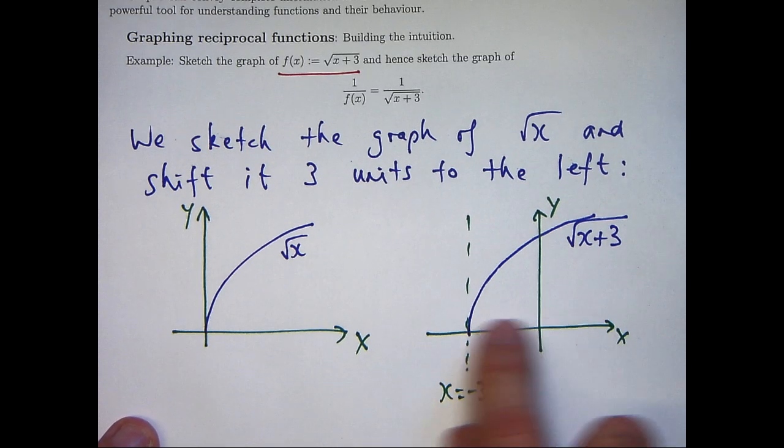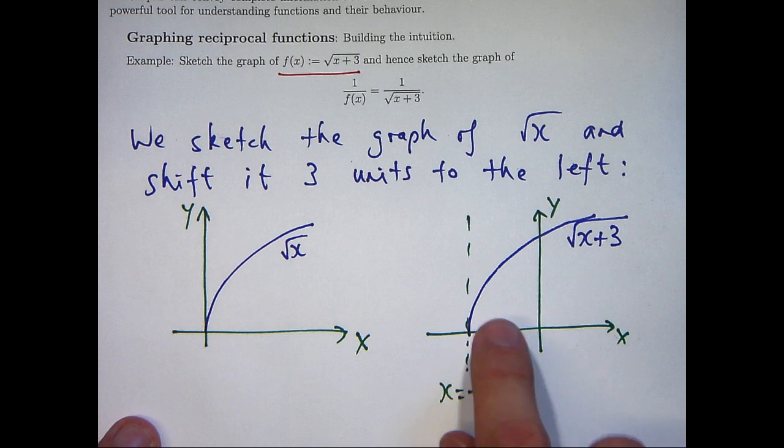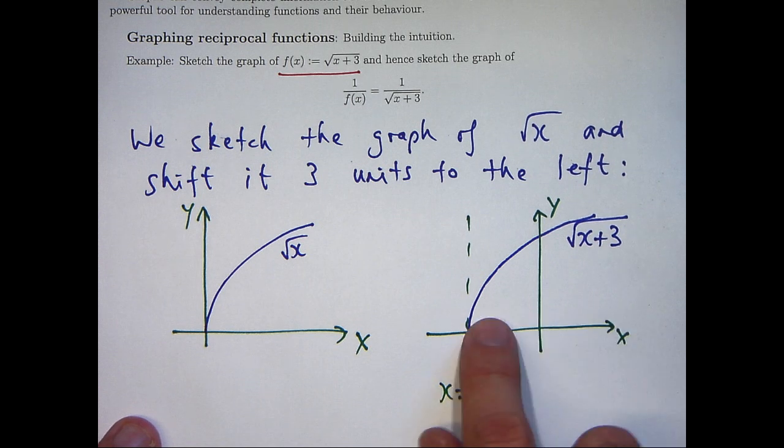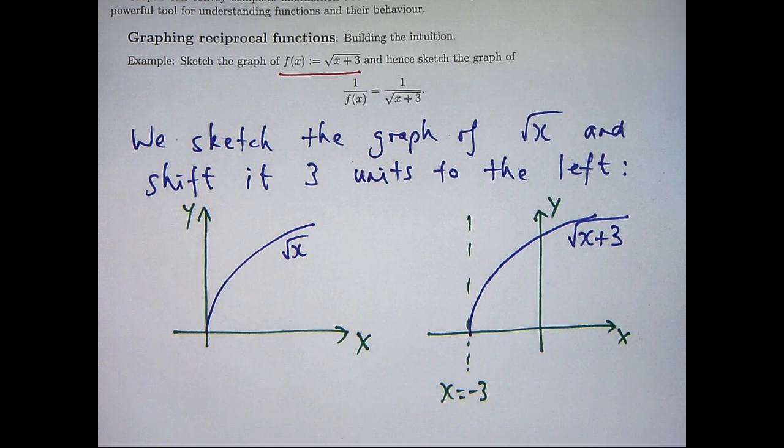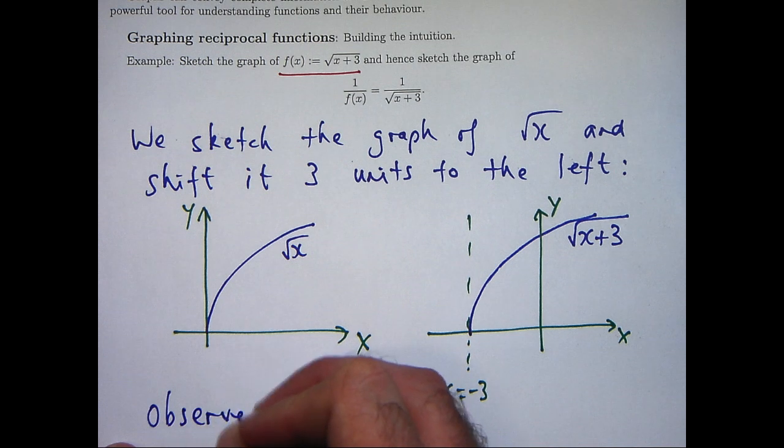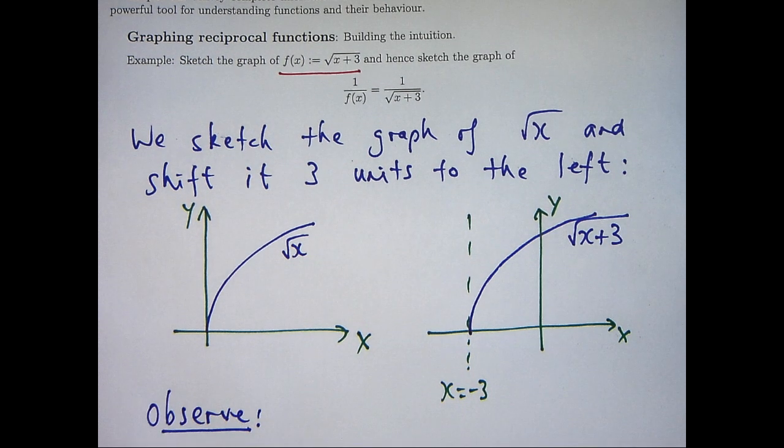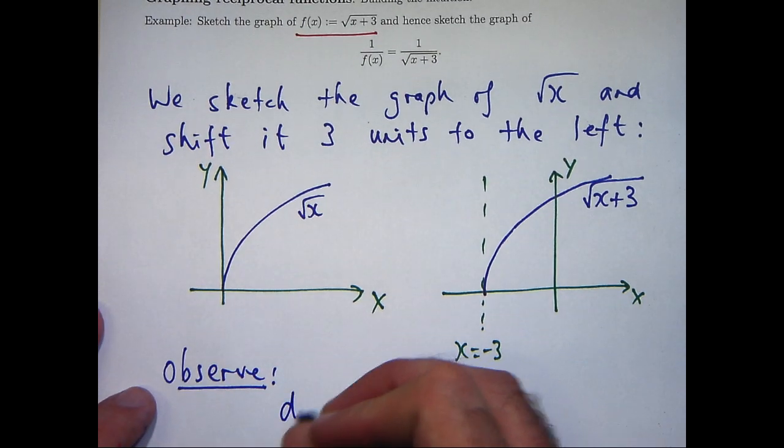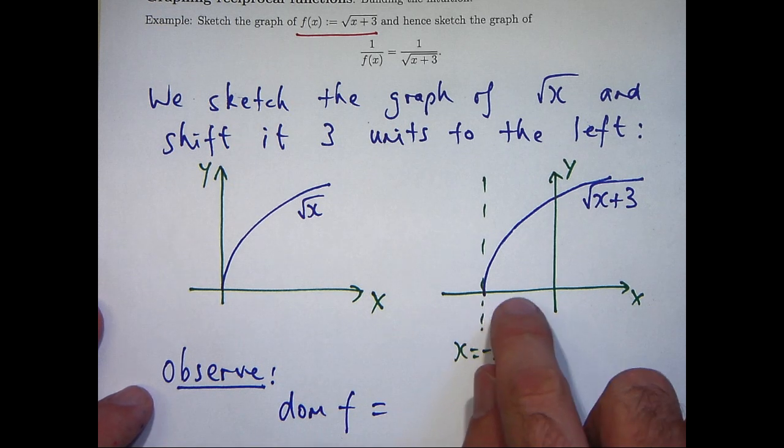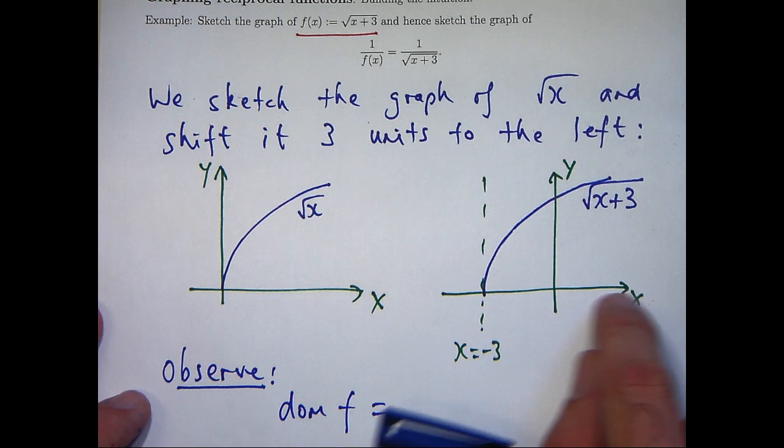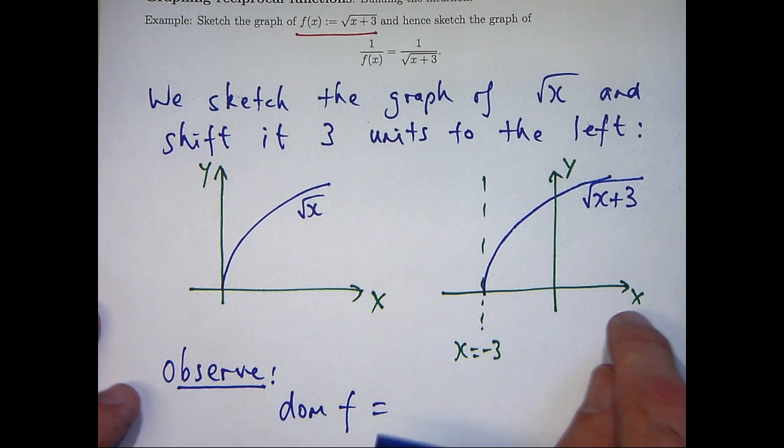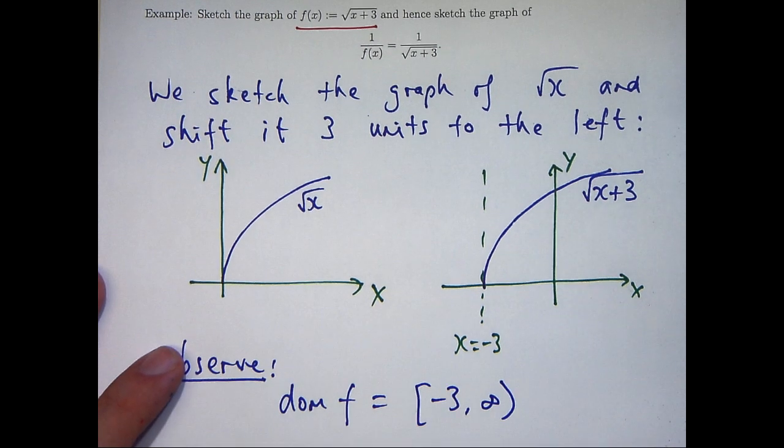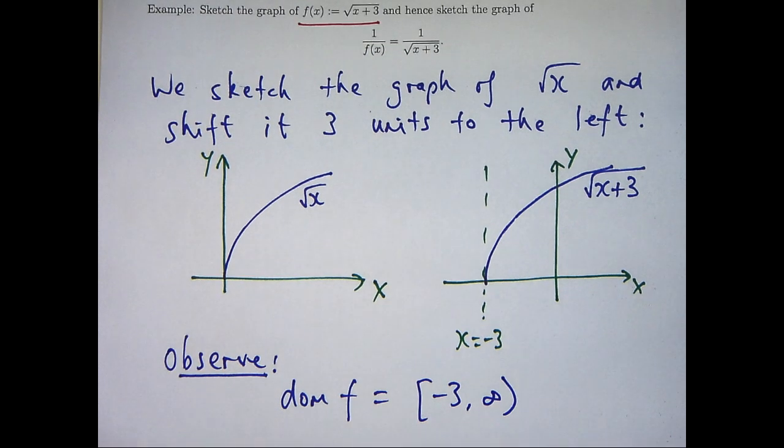Firstly, you can see the domain of the function associated with the graph lies here, on this interval along the x-axis. So any x-point here will be in the domain of our function. And that's important because we can use that information for calculating the domain of our reciprocal function. So if x is greater than or equal to minus 3, then this is basically the domain interval.